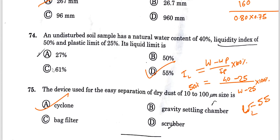Question 74: An undisturbed soil sample has a natural water content of 40%, liquidity index of 50%, and plastic limit of 25%. To find the liquid limit, plasticity index equals liquid limit minus plastic limit. Using the liquidity index formula, the liquid limit is 55%.